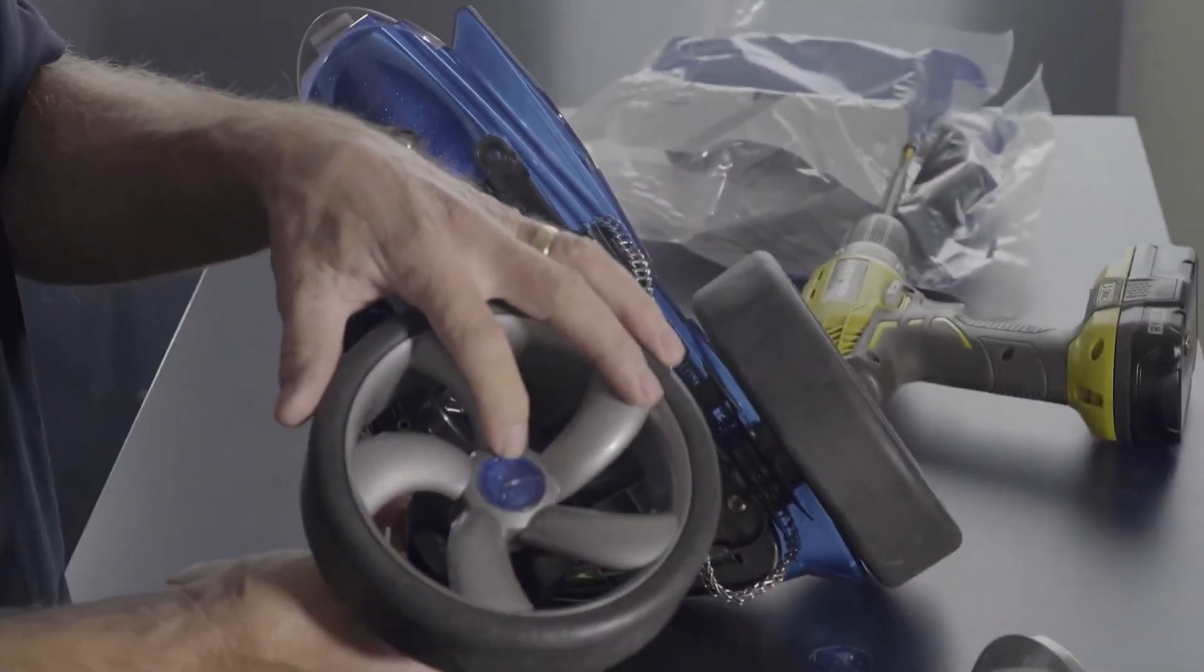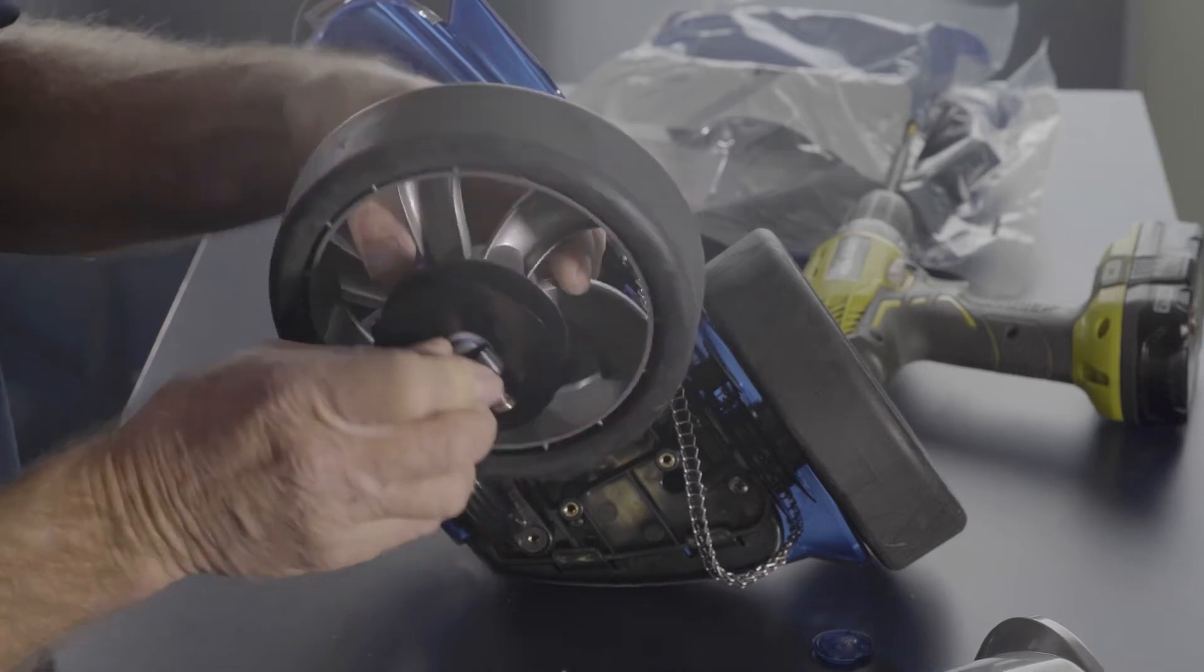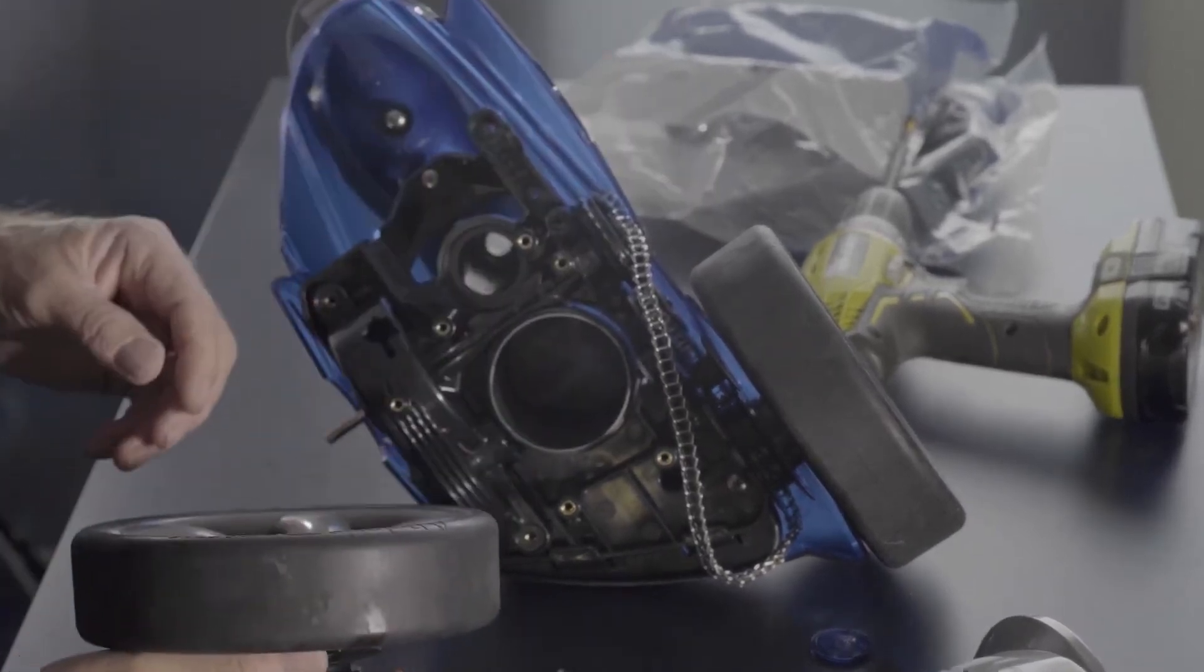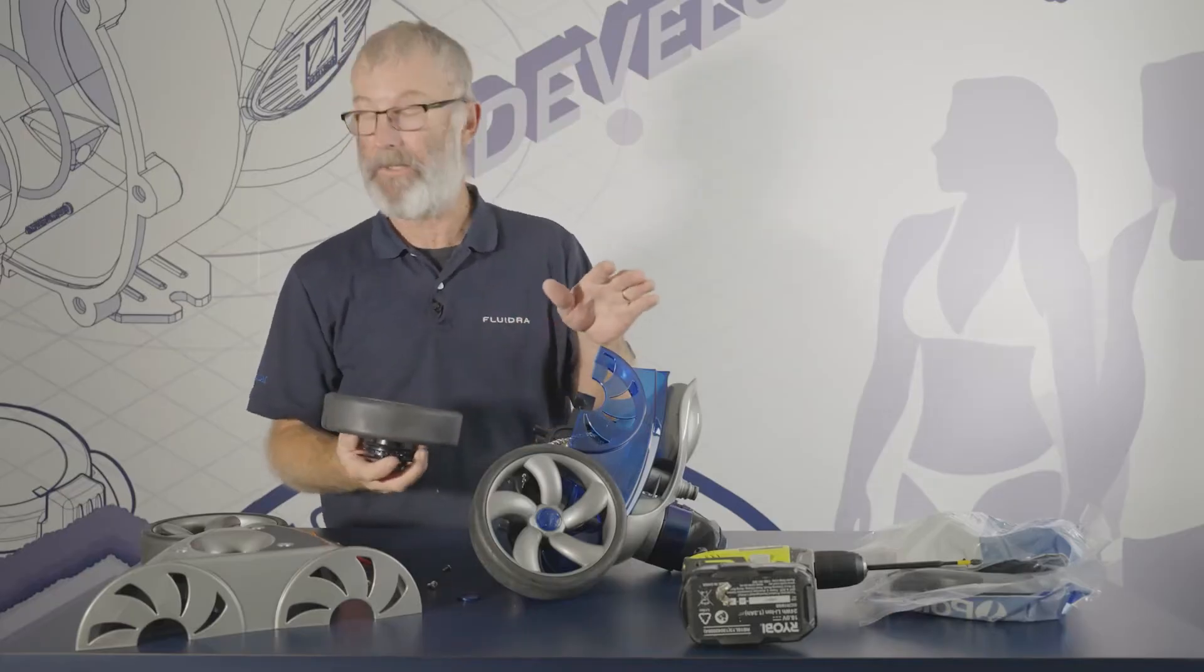And once again, you would take the hubcap off, take the screw out and the shaft comes out. Put new one in and then just do it all in reverse.